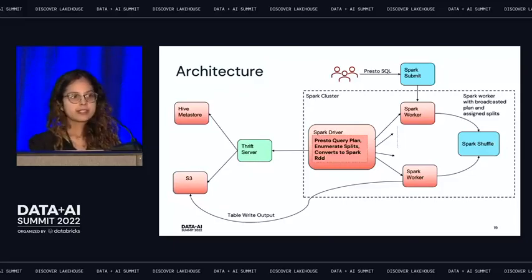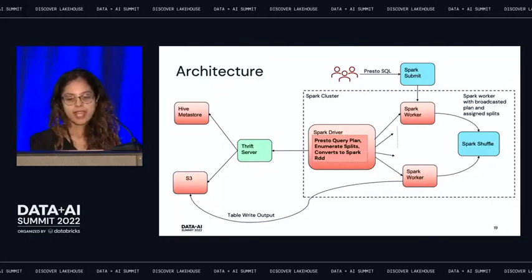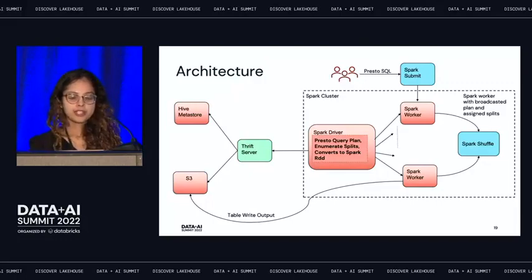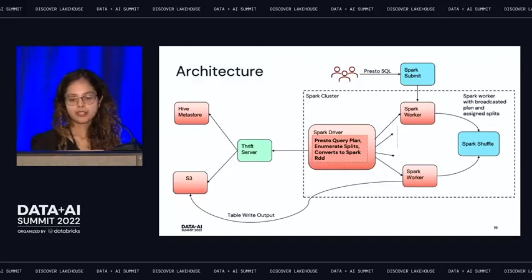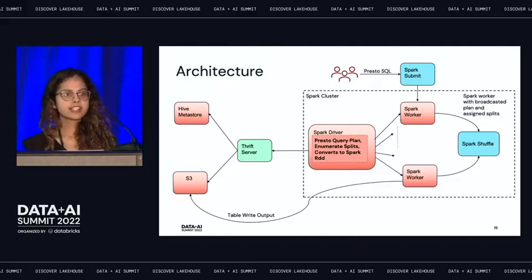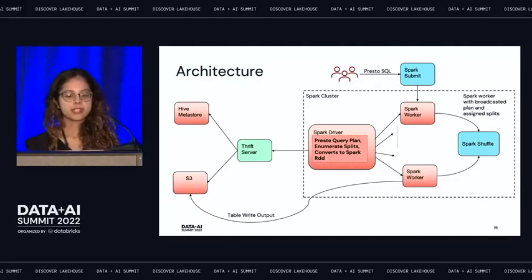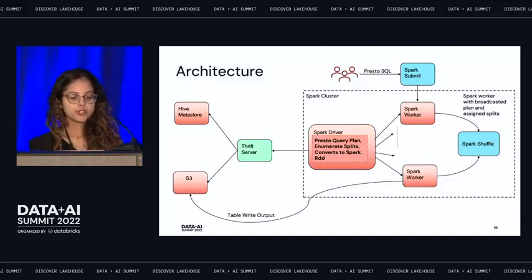Within each Spark worker, it's the Presto evaluation library that executes. For a scan task, the input is splits and the output is serialized shuffle rows. You send the Presto logical plan to Spark workers, deserialize the plan, and convert it into Presto executable operators. For a final writer stage, the input is shuffle rows from the upstream stage, and the output is a write to table — but before that, you can do a join or aggregation, and it's the Presto codebase evaluation library that executes.